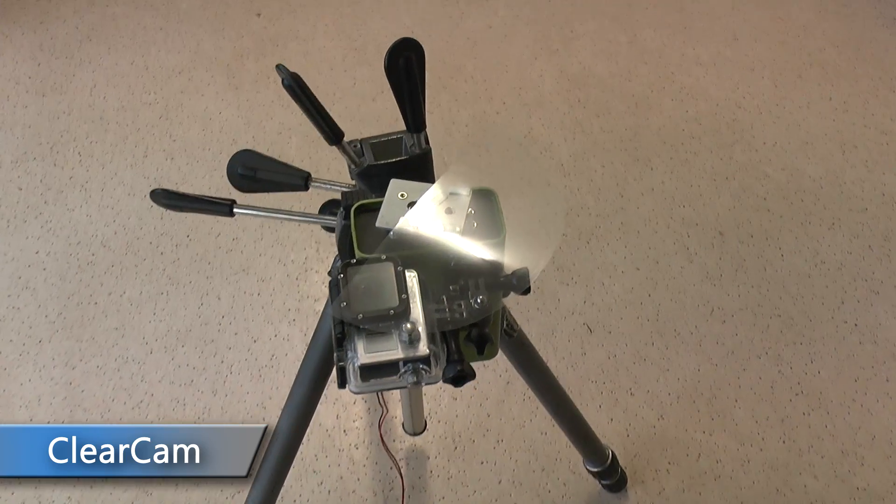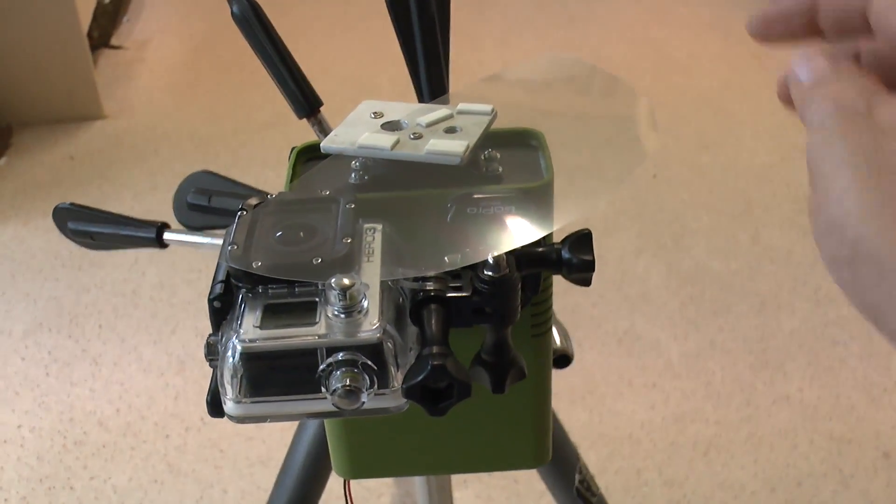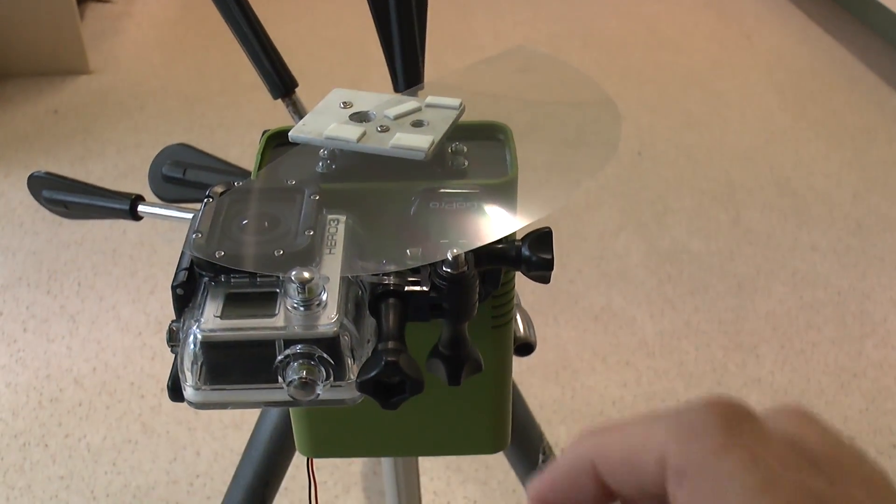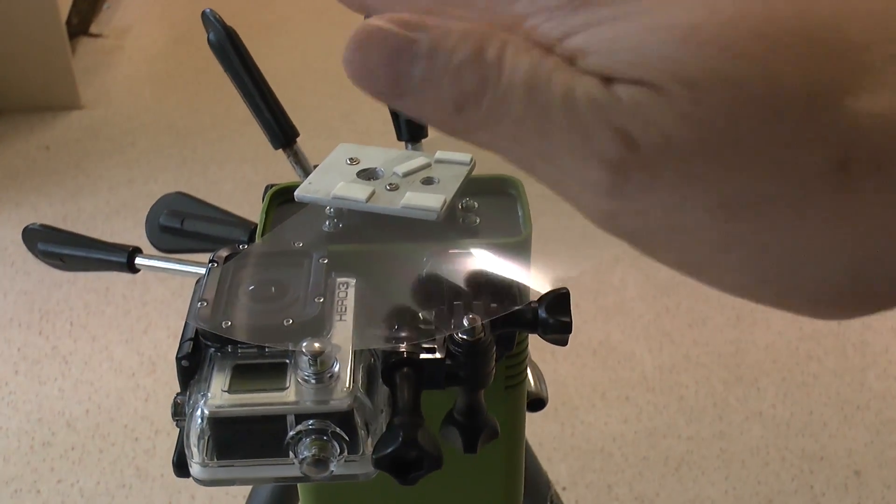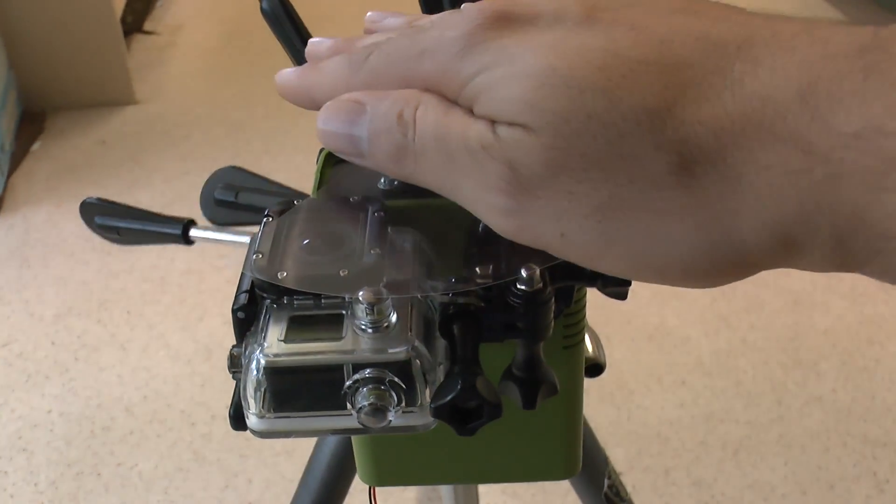This is the ClearCam. It consists of a GoPro camera, a box that has a servo motor in the top of it controlled by the servo timer too. There's also a thin transparency over the top. There would normally be a cover that covers the rest of the clear sheet.